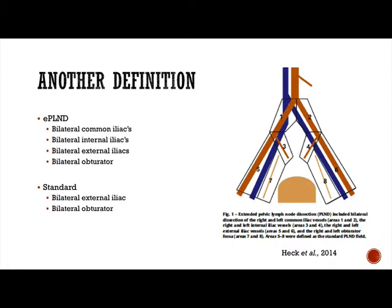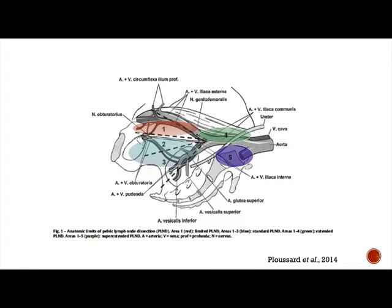From another paper, extended pelvic lymph node dissection includes the common iliacs, both internal iliacs, both external iliacs, and both obturators, whereas standard is just external iliac and obturators. Again, we're seeing a lot of variation, and how are we going to interpret studies on outcomes and node counts when definitions differ so widely?